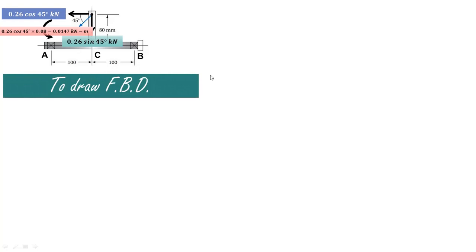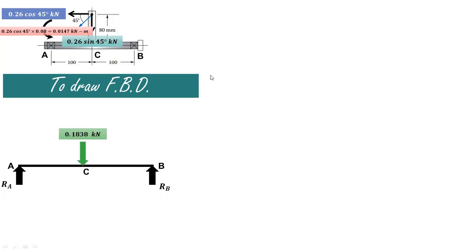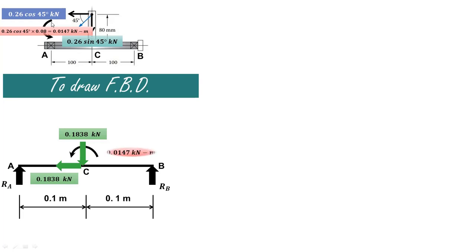Using these values we can draw the free body diagram. The beam is simply supported at A and B. The vertical force of 0.26 sin 45 is 0.1838 kN, the horizontal force of 0.26 cos 45 is also 0.1838 kN, and the anticlockwise moment is 0.0147 kN·meter. So the 260 N force has been converted into two forces — one vertically downward and one in the negative x direction — and a moment of 0.0147 kN·meter at point C.